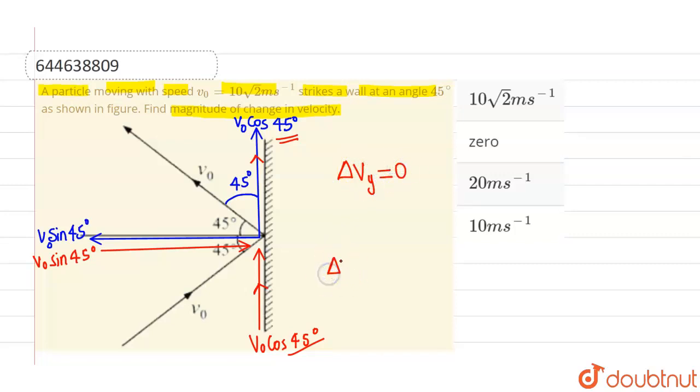Now let us calculate change in velocity along x axis. This will be v final. Let us suppose that this one is plus direction and this one is negative direction. So change in velocity will be given by v final minus v initial. Final velocity is v0 sin 45 degree. And minus the initial velocity, which is minus v0 sin 45 degree. Now, why this is minus v0 sin 45 degree? Because it is acting in this direction which is negative direction. So this comes out to be 2 v0 sin 45 degree.